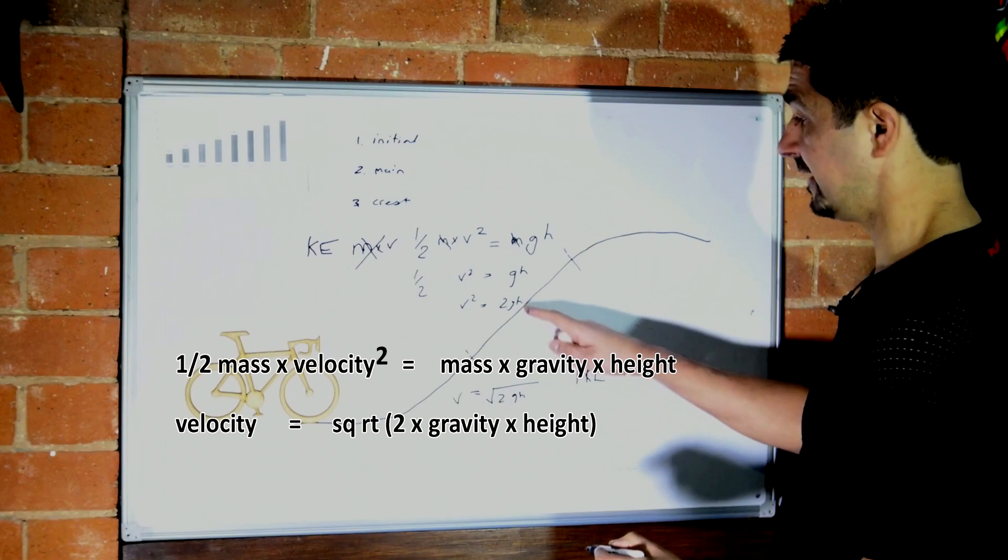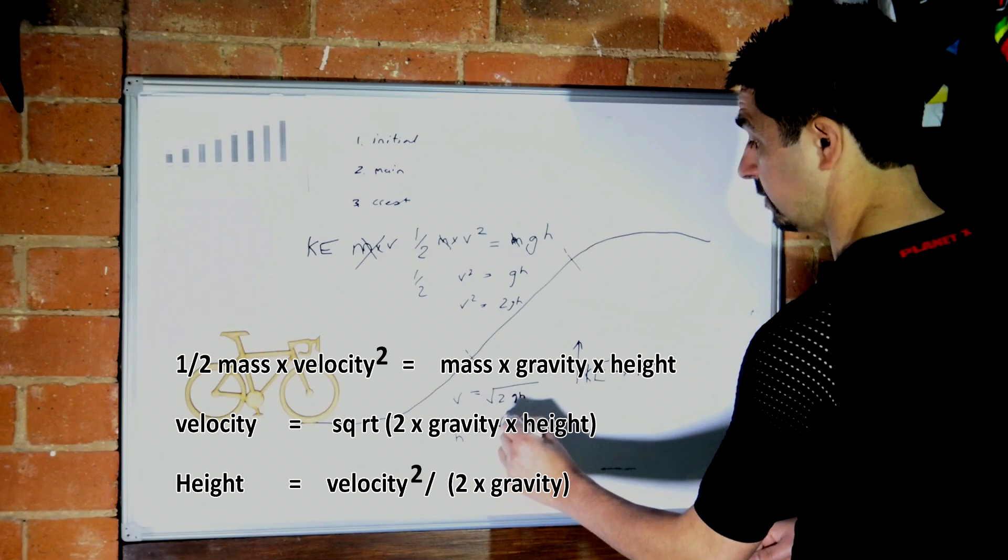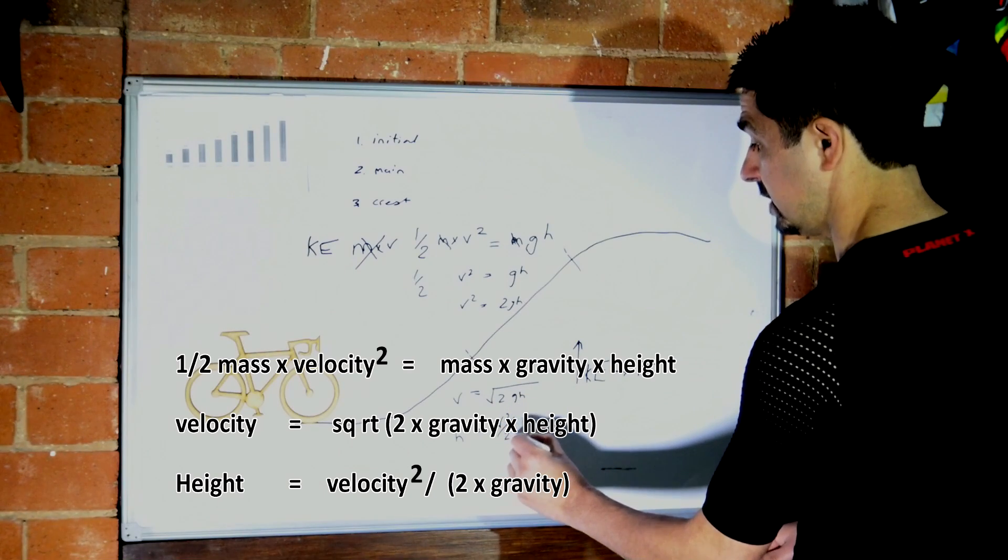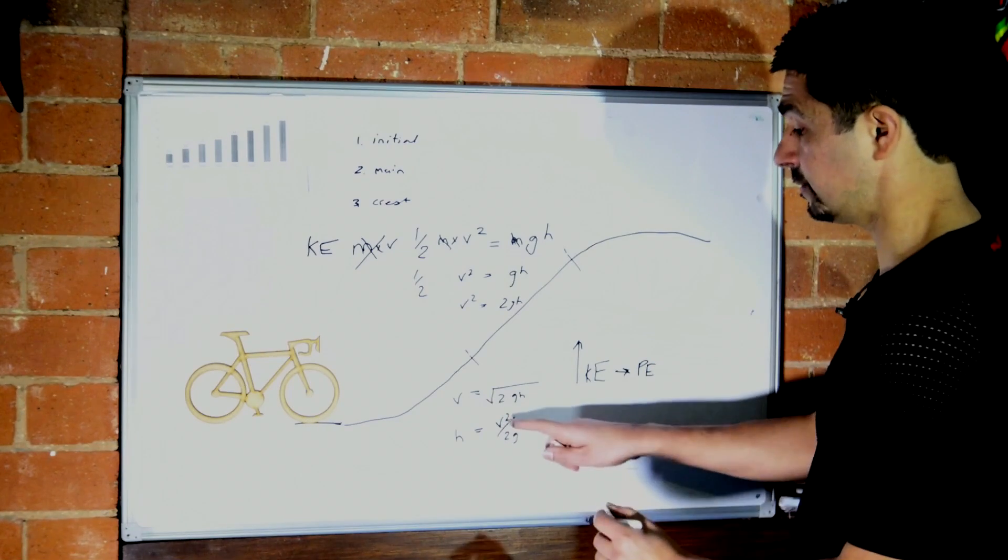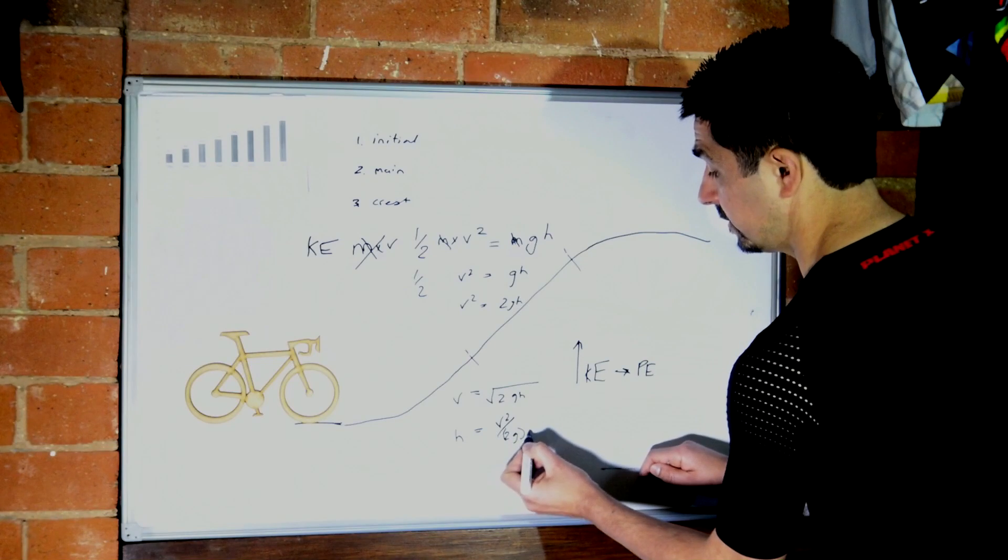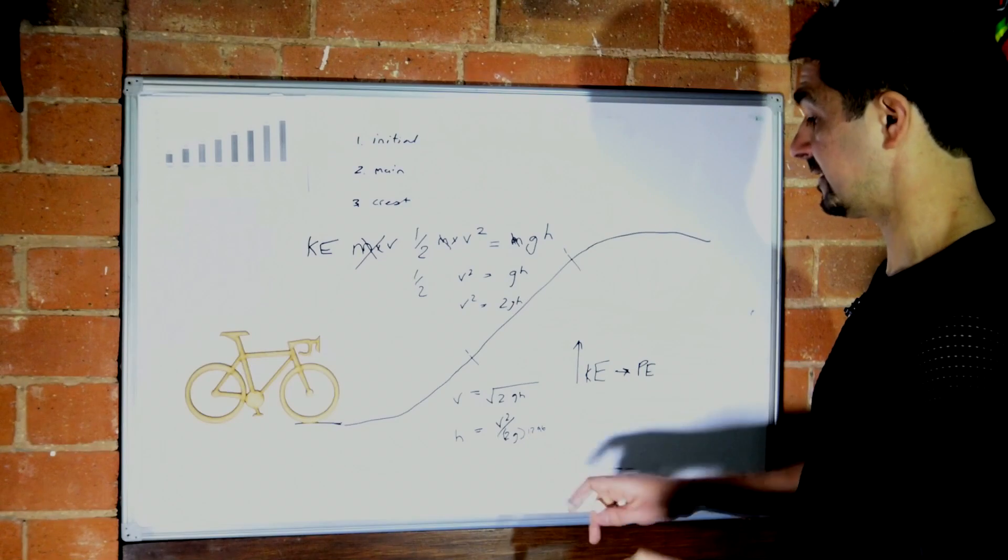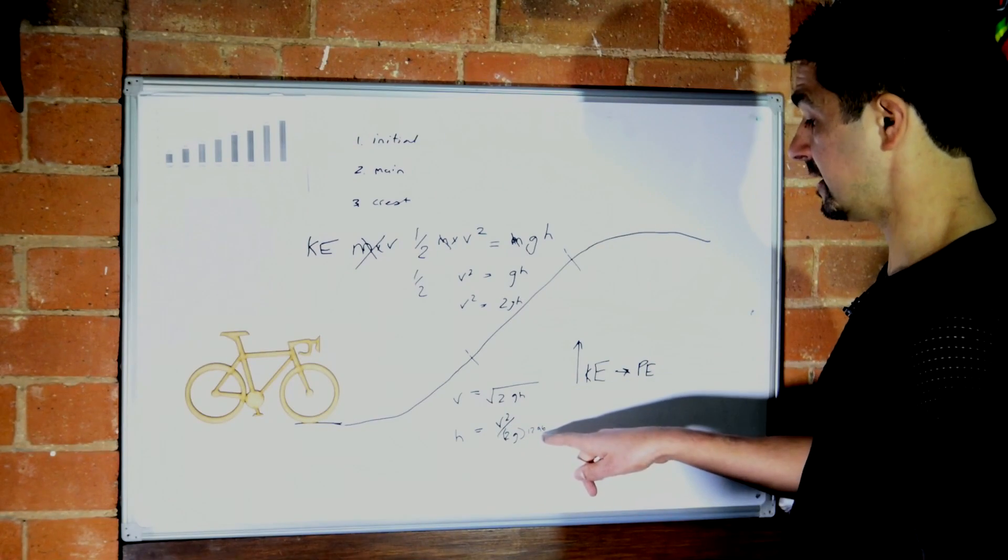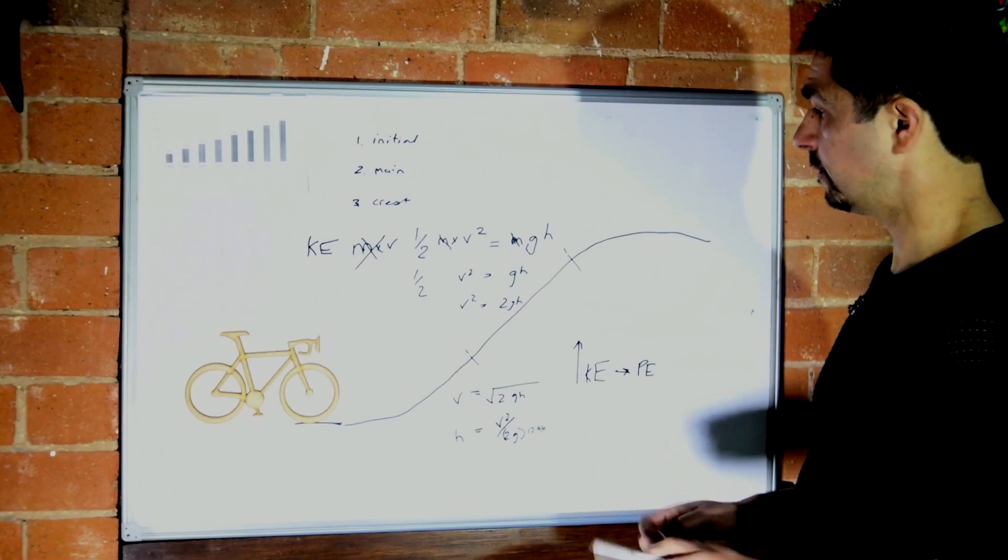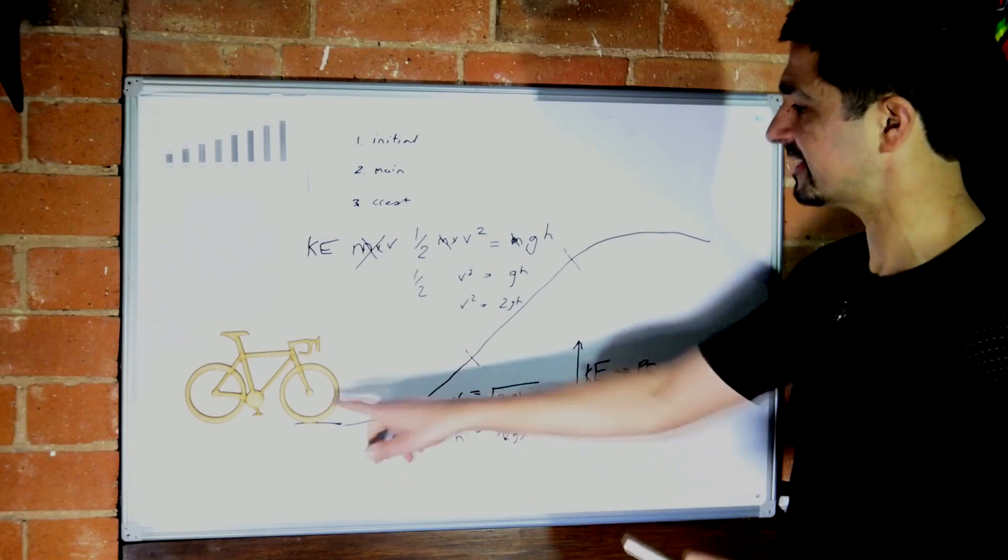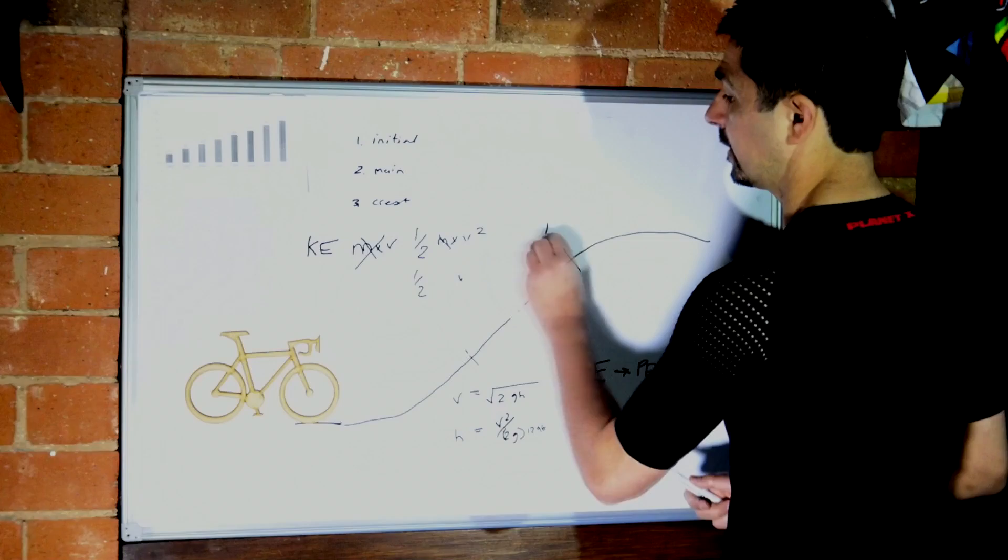Or if we want to find the height, we can reverse it. H equals v squared over 2g. That's velocity in meters per second. To convert that into kilometers per hour, put in a constant, which would be 12.96. That would be 3.6 squared on the bottom. So now using that equation, we can easily work out the conversion rate from the cyclist's speed into elevation gained.